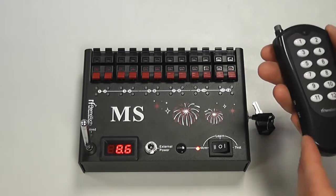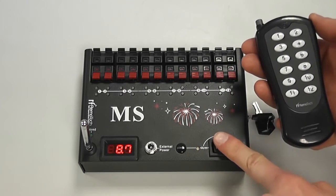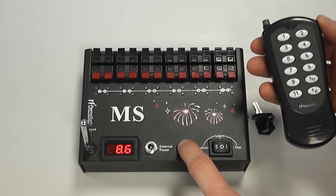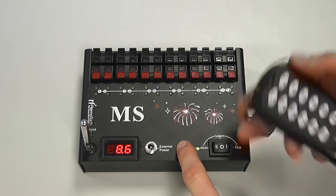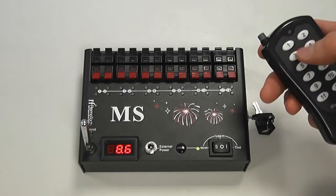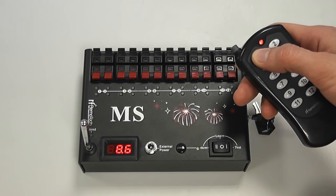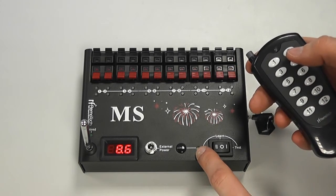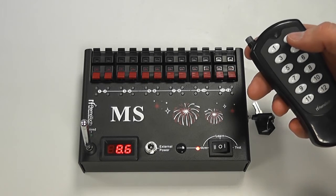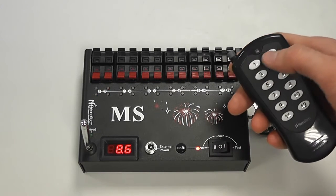If you want to re-pair the remote control to the receiver just switch it back to learn mode. Press and hold the learn button until the learn light comes on, let go and press any button on the remote control. The learn light blinks three times and if you put the receiver back into arm mode we can now fire cues.